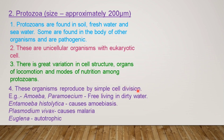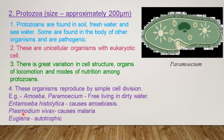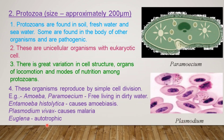Protozoans reproduce by simple cell division, where the parent cell divides itself into two cells. Examples: Amoeba and Paramecium are free-living in dirty water and do not depend on other organisms for nutrition. Entamoeba histolytica causes amoebiasis, a disease of the intestine. Plasmodium vivax causes malaria. Euglena is autotrophic — it prepares its own food.